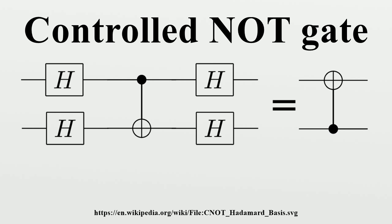The CNOT gate is the quantization of a classical gate operation. The CNOT gate operates on a quantum register consisting of two qubits. The CNOT gate flips the second qubit if and only if the first qubit is. If one allows only classical input values for both qubits, the target output of the CNOT gate corresponds to the result of a classical XOR gate.